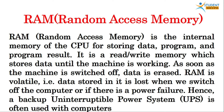Next is RAM — Random Access Memory. It comes under the category of primary memory. It is the internal memory of the CPU for storing data, programs, and program results. It is a read-and-write memory which stores data until the machine is working. As soon as the machine is switched off, the data is erased, so RAM is volatile — data stored in it is lost when we switch off the computer or if there is a power failure, hence a backup is needed.